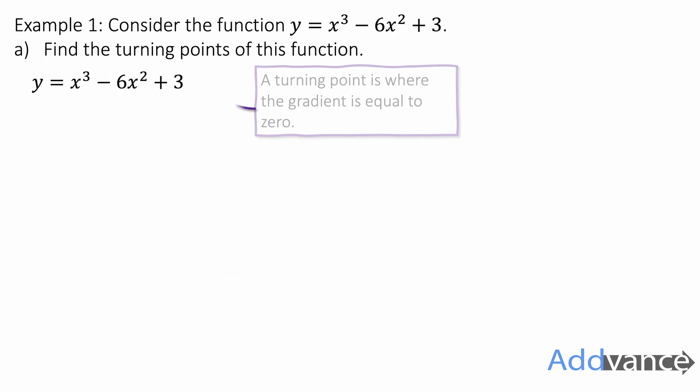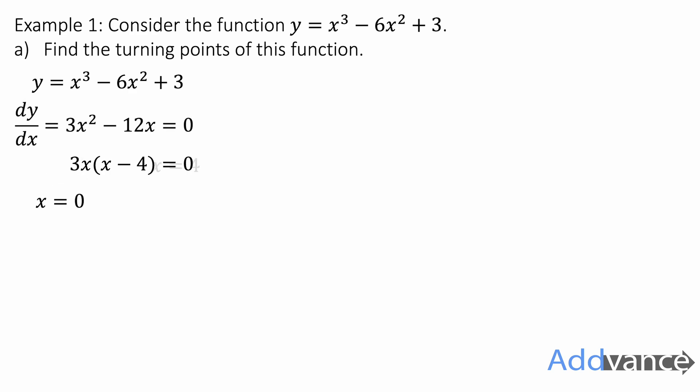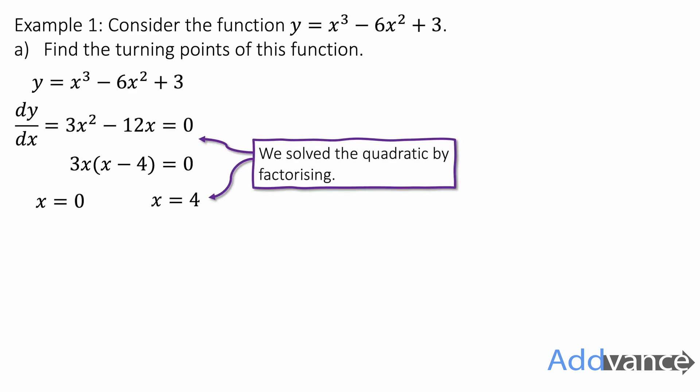Let's start by finding the turning points. At a turning point, the gradient is equal to zero. So we differentiate to find the gradient and then set it equal to zero. Differentiating gives us 3x squared minus 12x equals zero. We solve this by factorising out an x. Either x equals zero or x equals 4. Those are the x coordinates of the turning points.